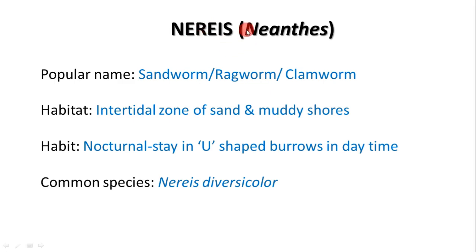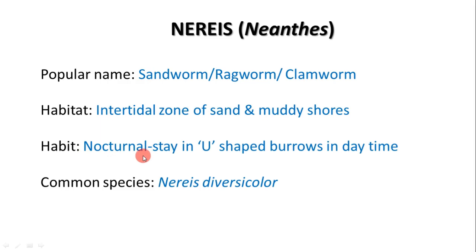Nereis belongs to the genus Nereis. It is popularly named as sandworm, ragworm, or clamworm. Usually it is found in the intertidal zone of sand and muddy shores. It is a nocturnal animal, meaning they are active during night time and mostly inactive during day time. During that time they dwell in U-shaped burrows seen at the seashores. The most common species is Nereis diversicolor.